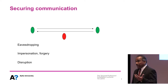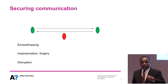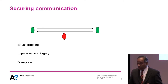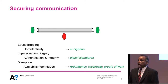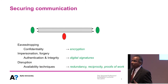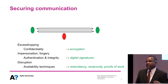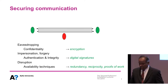The adversary can listen to messages being exchanged — that's called eavesdropping. The adversary can also try to change or inject messages — impersonation or forgery. Or they can try to simply disrupt communication. These are well-known problems with well-known solutions from cryptography or distributed systems. For example, messages can be encrypted to provide confidentiality, preventing eavesdropping, and messages can be signed using digital signature mechanisms to resist impersonation or forgery.